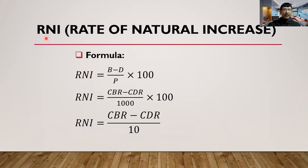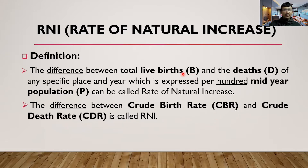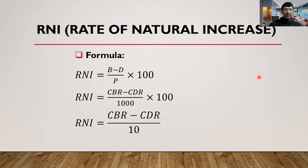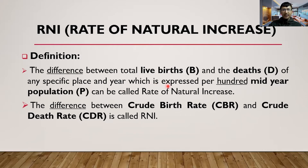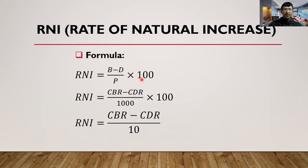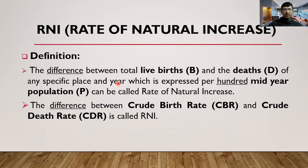To find the Rate of Natural Increase, you can use either formula. The definition is: the difference between total live births and deaths of any specific place and year, expressed per 100 mid-year population. You can see it is multiplied by 100, so it is expressed per 100 mid-year population.